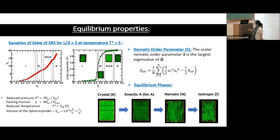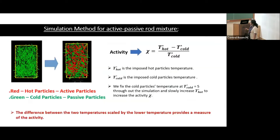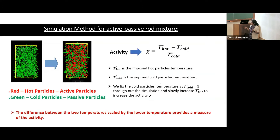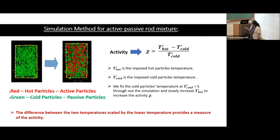We took different equilibrated structures from different phase points and assigned activity. Starting from an equilibrated isotropic structure, we randomly chose half of the particles and slowly increased their temperature, keeping the other half at constant temperature. The temperature difference between the two types of particles is the measure of activity. The hot particles — shown in red — are the active particles with higher temperature, and the cold particles are the passive particles with lower temperature.